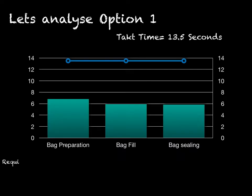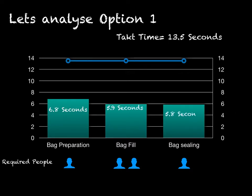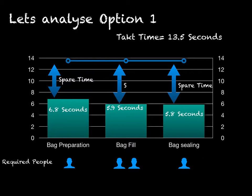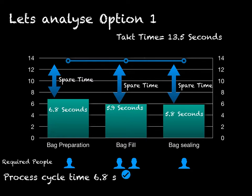Let's analyze option 1: adding one more backfill operation. This splits the time in two, bringing it down to 5.9 seconds. The process cycle time should be somewhere around 6.8 seconds — way much faster than the required takt time. By doing this, we have created more spare time in process 2 and added one more operation to our overall manufacturing process, making the product more expensive. Since the additional speed is not required by the customer, this is not a good solution for this example.